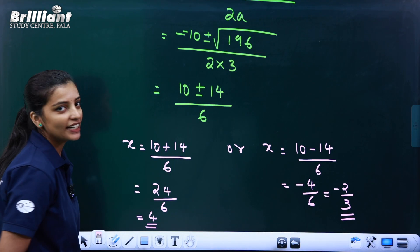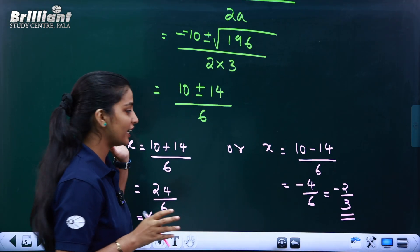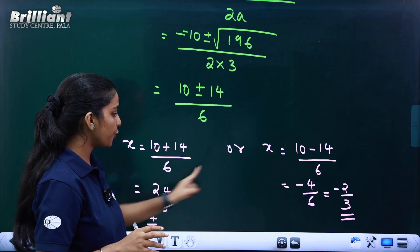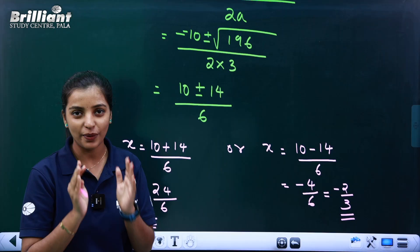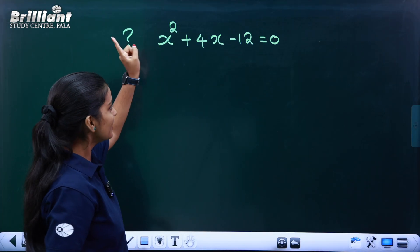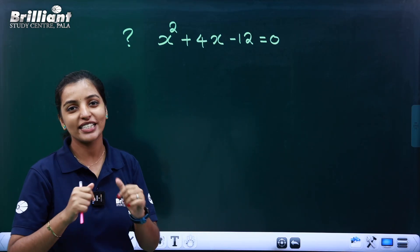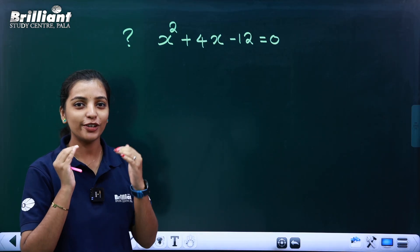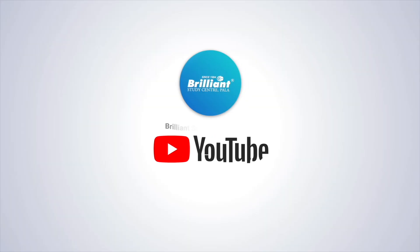So we get two different values: x is equal to 4 and x is equal to minus 2 by 3. Thank you so much for joining us and we'll see you in the next video.